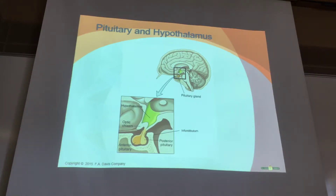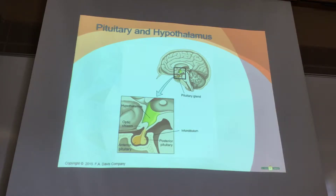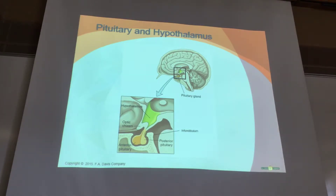The area where the pituitary and the hypothalamus connect is called the infundibulum. The pituitary is divided into two parts: an anterior part—also called the adenohypophysis—and a posterior part—called the neurohypophysis—and they do different things.